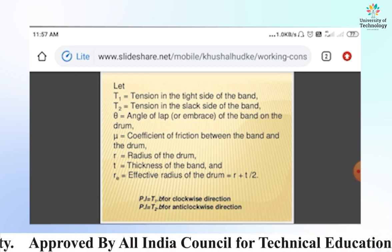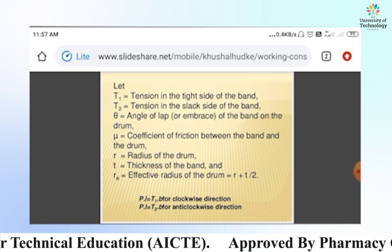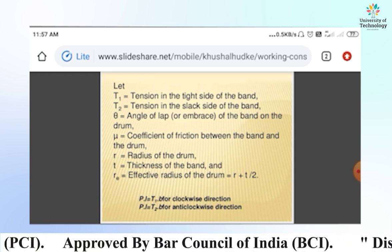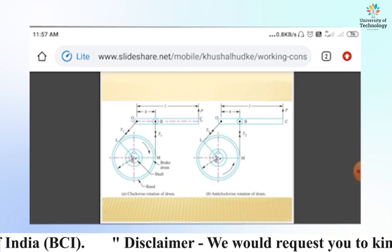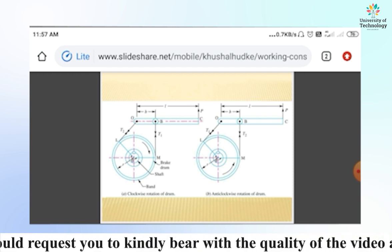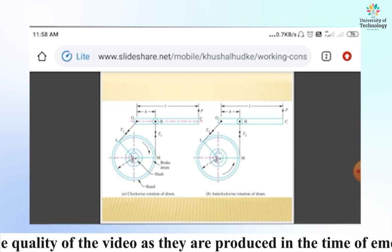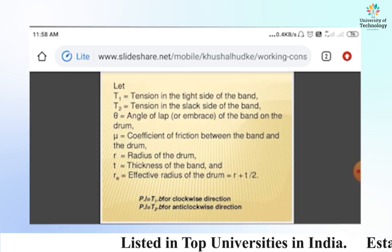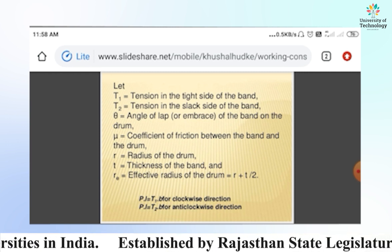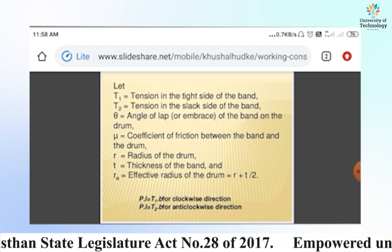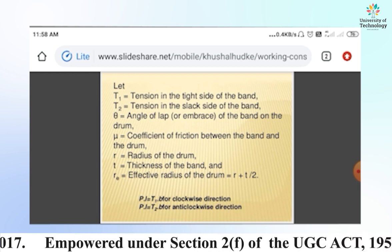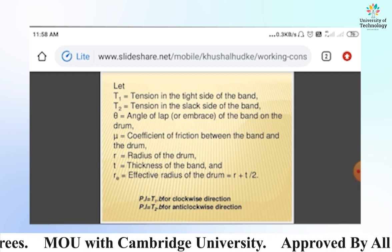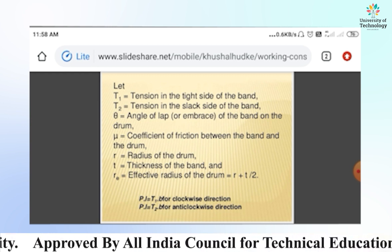Let T1 be the tension in the tight side of the band and T2 be the tension in the slack side. Theta is the angle of wrap of the band on the drum, as shown by angle LOM. Mu is the coefficient of friction between the band and the drum. Small r is the radius of the drum, small t is the thickness of the band, and the effective radius of the drum equals the radius of the drum plus half the thickness of the band.